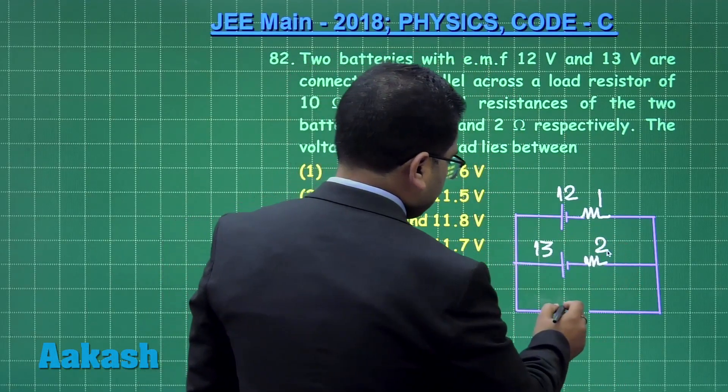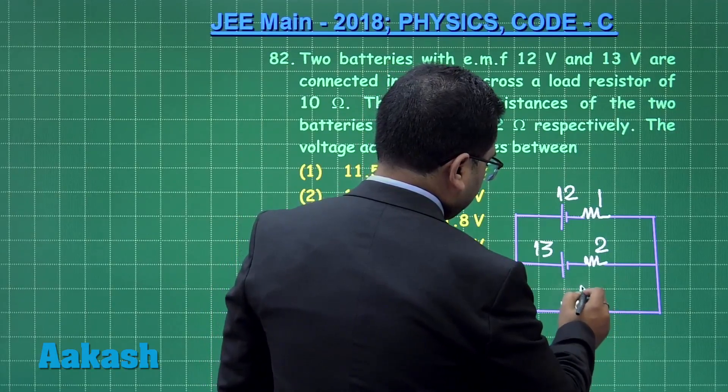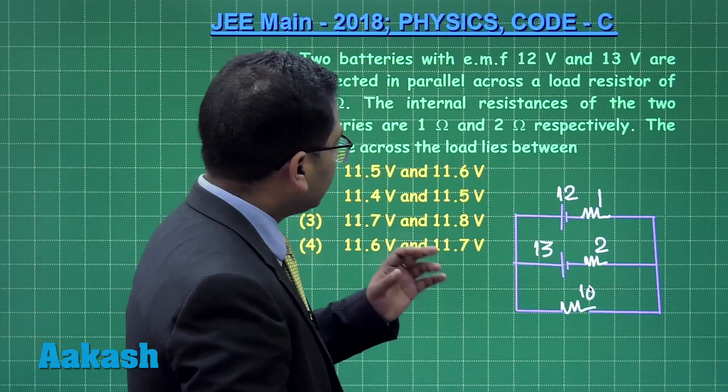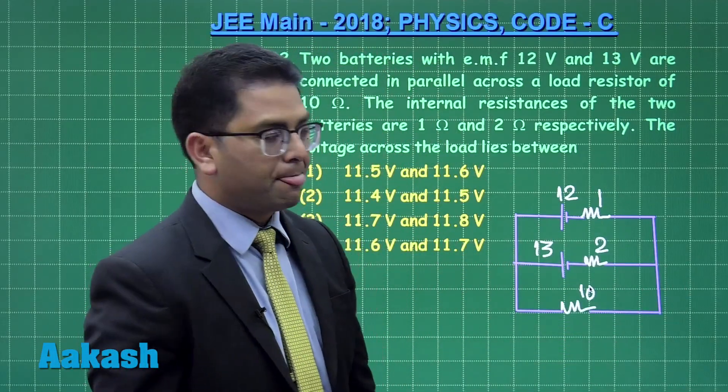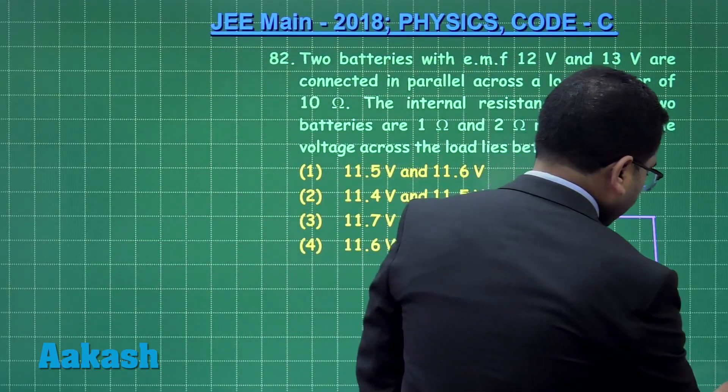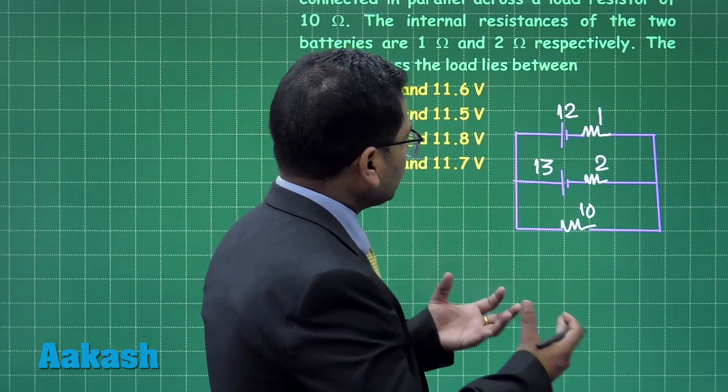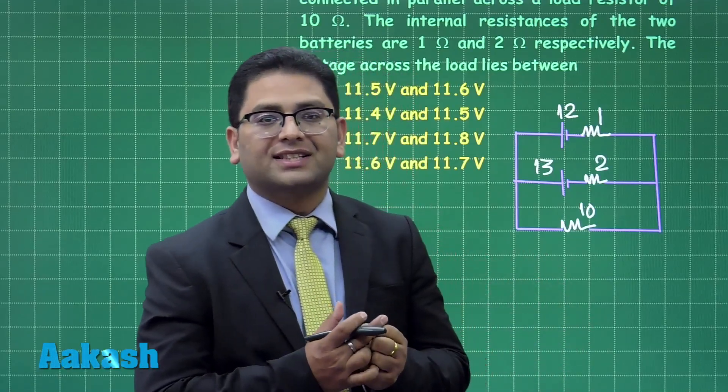And the load resistance is quite obviously given there, that's 10 ohm. Now what I need to do is I need to calculate the potential difference across the 10 ohm resistance.